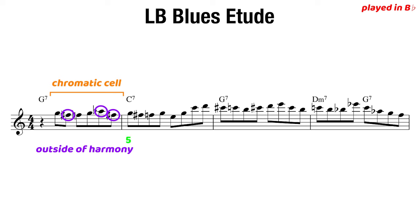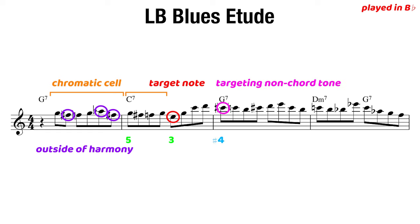Then we play another melodic cell or chromatic cell: G, F-sharp, F, G, E — targeting the third of our dominant chord there. As we keep going, some of these cells become more and more chromatic. The next bar we land on C-sharp, which is the tritone of our dominant chord — a very good example of targeting a non-chord tone or an outside tone to create some tension while still playing these melodic cells.